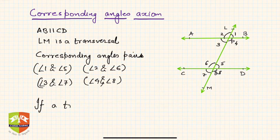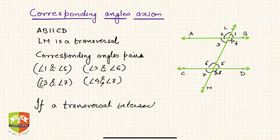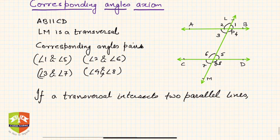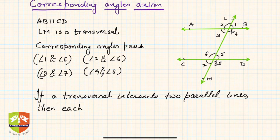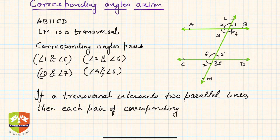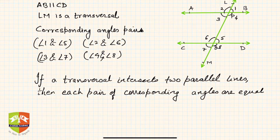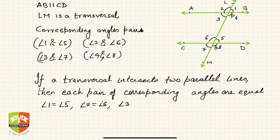The Corresponding Angle Axiom states: if a transversal intersects two parallel lines, then each pair of corresponding angles are equal. So that means angle one equals angle five, angle two equals angle six, and angle three equals angle seven.